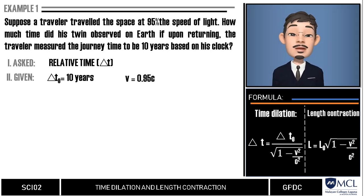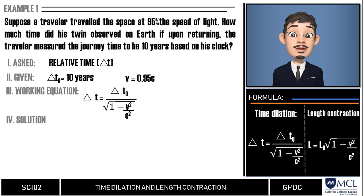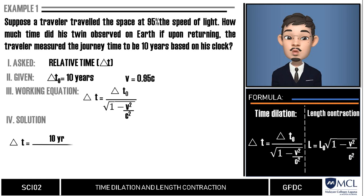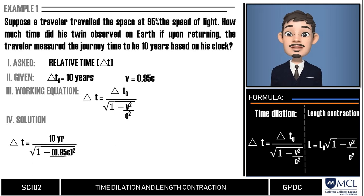Since this is a time dilation problem, we will use the first equation. Then, let us substitute now the given units. Delta t is equal to 10 years over square root of 1 minus 0.95c squared, our given velocity, over c squared.